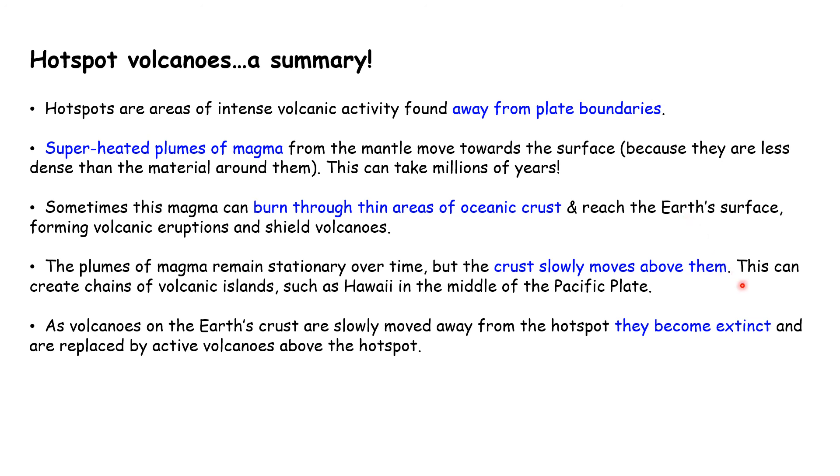The plumes of magma remain pretty much stationary, but the crust slowly moves above them. This can create chains of volcanic islands like Hawaii in the middle of the Pacific plate. As the volcanoes of the earth's crust are slowly moved away from the hot spot, they can become extinct and are replaced by active volcanoes above the hot spot.